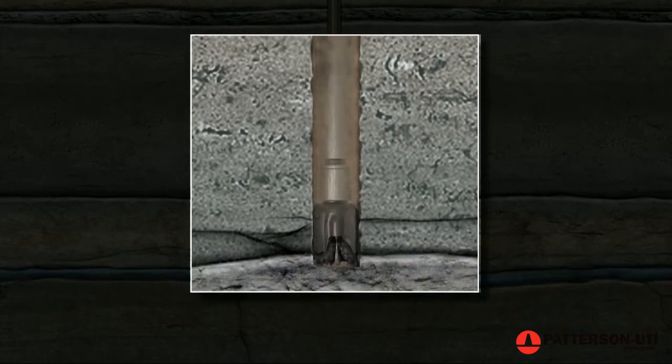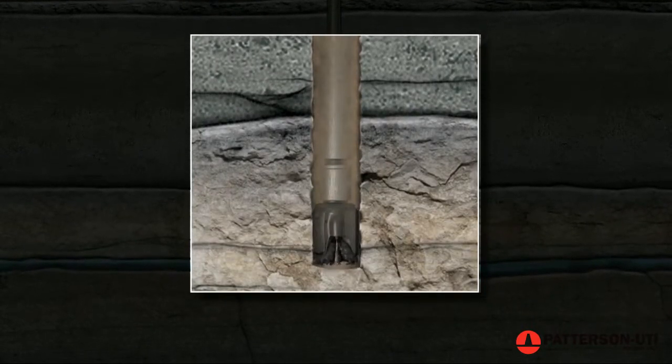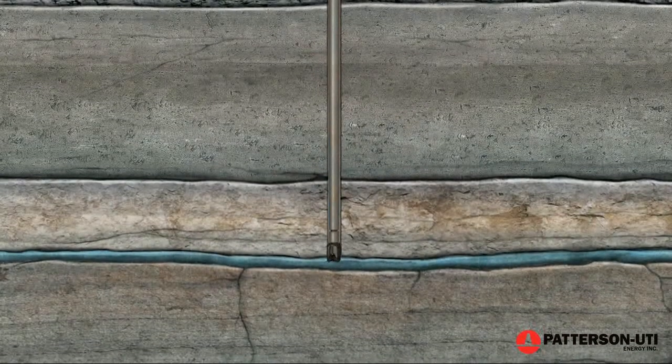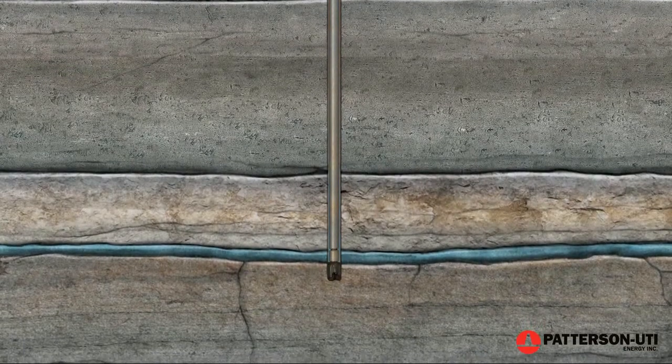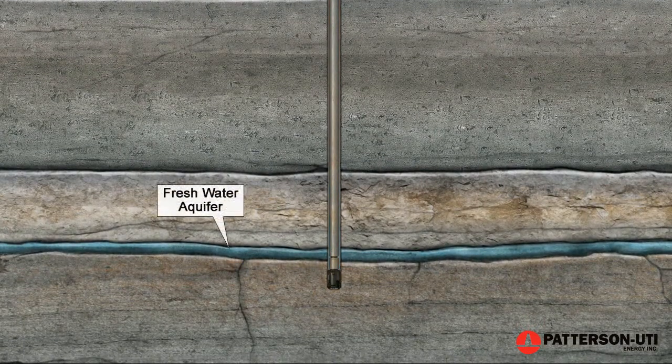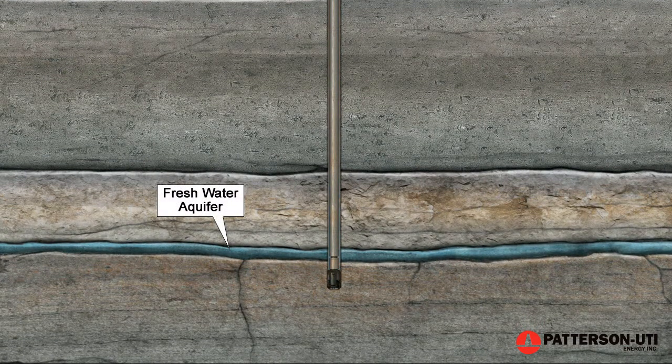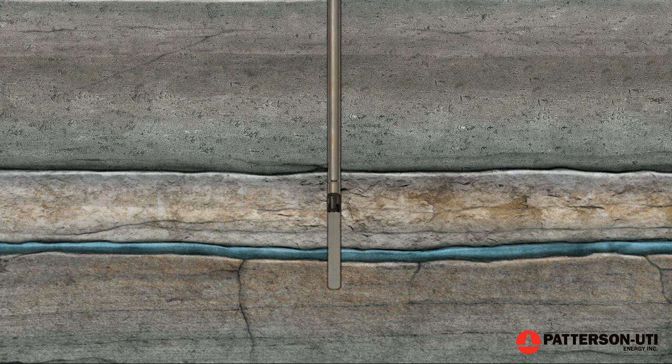The mud also cakes on the walls of the wellbore, keeping it intact. Similar to a vertical well, the hole is drilled to just under the deepest fresh water near the surface. The drill pipe and bit are then removed.